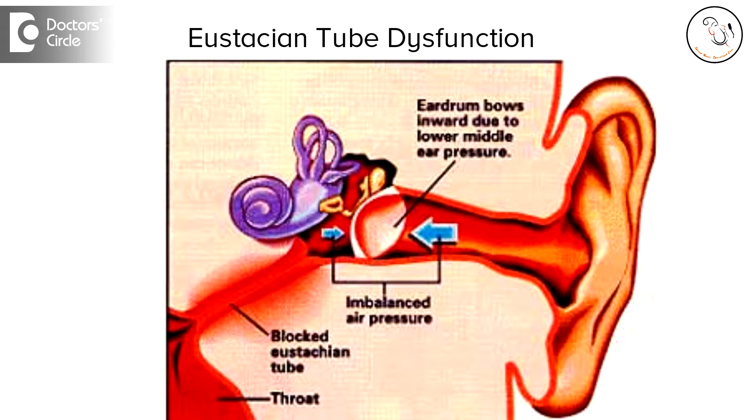That means on the outer part of the eardrum as well as the inner part of the eardrum, the air pressure is maintained at the same level so that sound can pass through the eardrum into the inner ear without any impedance or blockage.